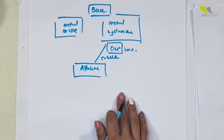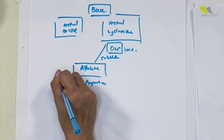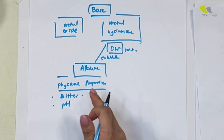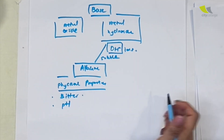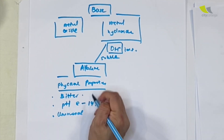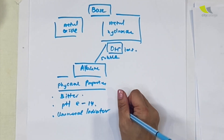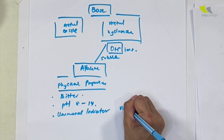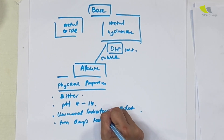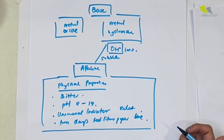What are the physical properties of alkalis? They taste bitter. Their pH level ranges from 8 all the way to 14 — remember, 7 is neutral. Alkalis turn universal indicator blue-indigo to violet, and they also turn damp red litmus paper blue. These are the physical properties of alkalis.